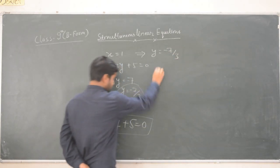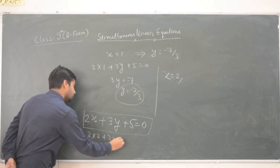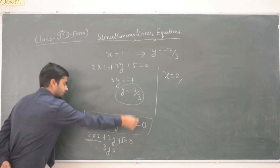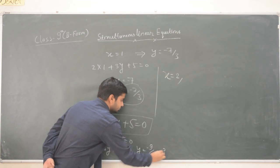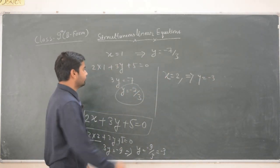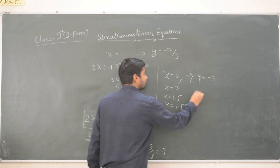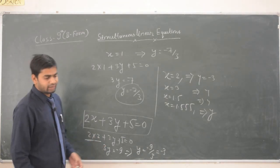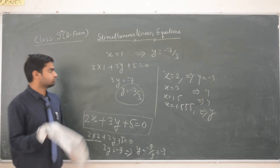Now taking x equal to 2: putting x equal to 2 we get 2 times 2 plus 3y plus 5 equal to 0, that is 3y equal to minus 9, so y equal to minus 3. So with x equal to 2 we get y equal to minus 3. If you put x equal to 3, or 1.5, or any value, you will always get a value of y. So a single linear equation in two variables always gives an infinite number of solutions, whereas a single linear equation in one variable gives a unique solution.